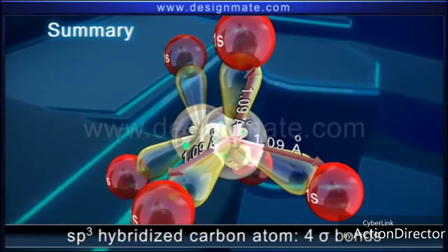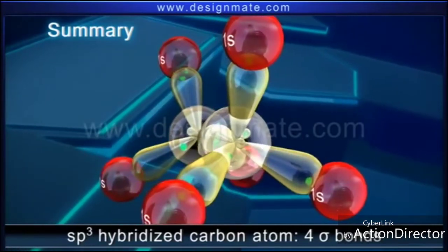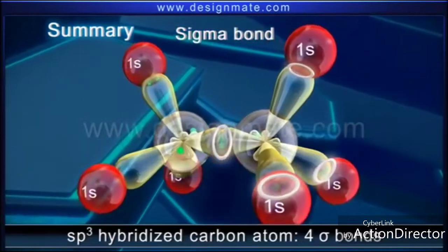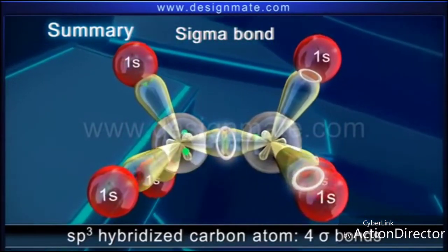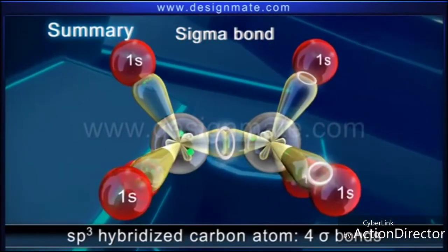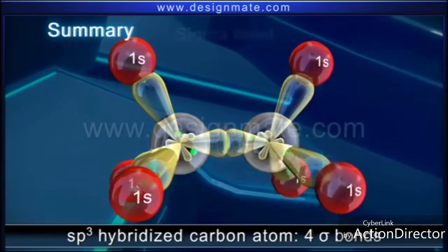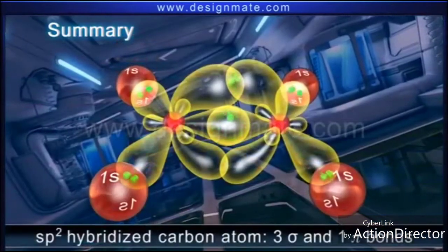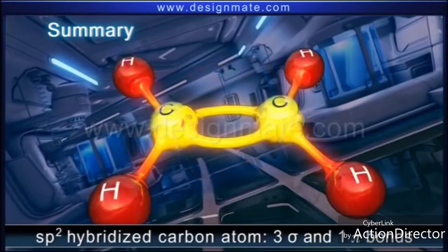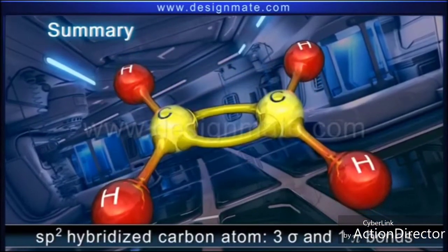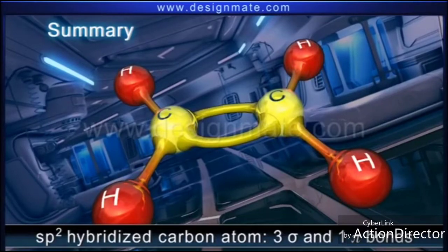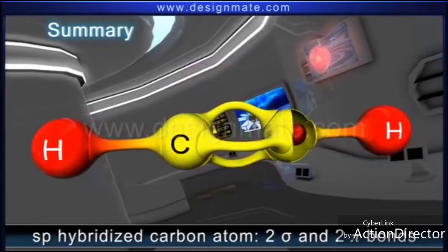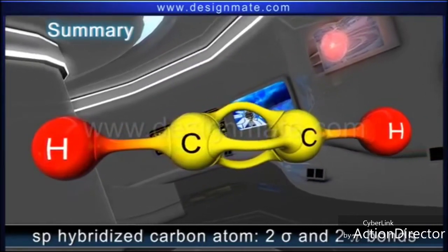To summarize, we have studied that whenever a carbon atom in an organic compound forms four sigma bonds directed along the corners of a regular tetrahedron, it is sp3 hybridized. A carbon atom that forms three sigma and a pi bond is sp2 hybridized, while the one in which it forms two sigma and two pi bonds is sp hybridized.